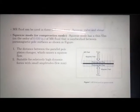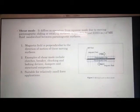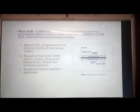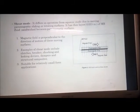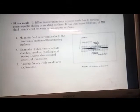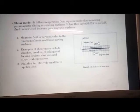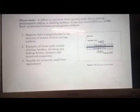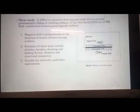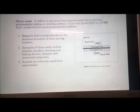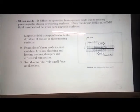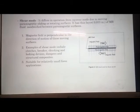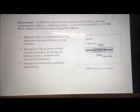The amplitude in squeeze mode can be of a few millimeters. The shear mode differs from squeeze mode due to moving paramagnetic sliding or rotating surfaces. It has a thin layer — generally 0.015 inches of MR fluid — sandwiched between paramagnetic surfaces. The magnetic field is perpendicular to the direction of motion of these moving surfaces. Examples of shear mode applications include clutches, brakes, chucking and locking devices, dampers, and structural composites. It is suitable for relatively small applications.